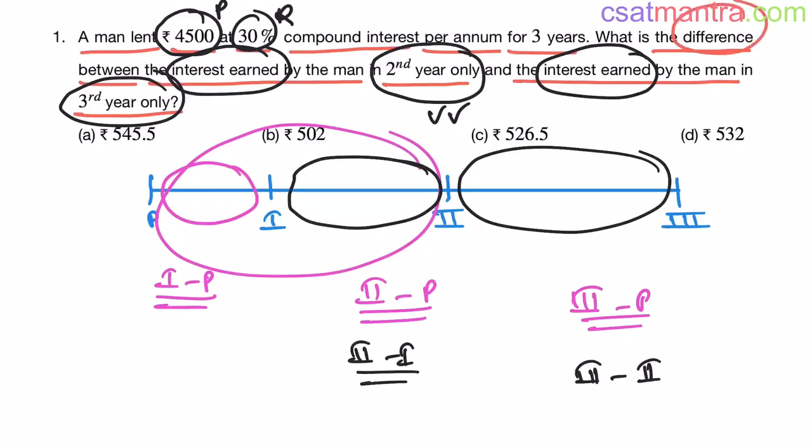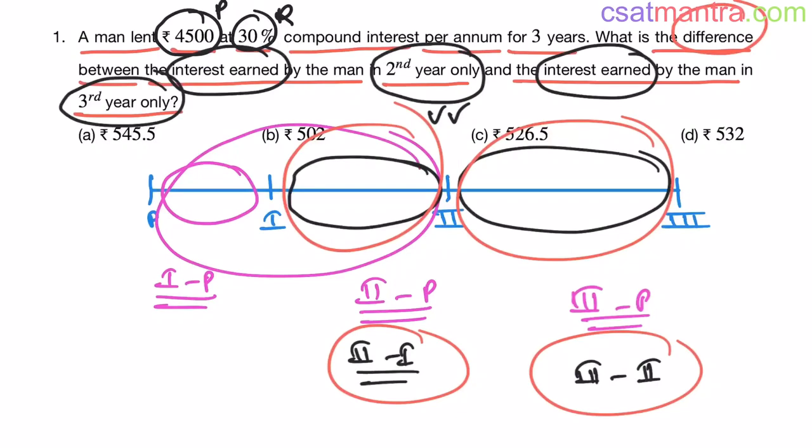Now, we want difference between this value and this value. Now, see few observations here. Interest earned in 2nd year will be always greater than 1st year. When it comes to compound interest, you are having interest on interest, my friends. When it comes to simple interest, you are having interest on principal only. But when it comes to compound interest, principal and interest on interest. In this year, you had interest on the interest earned during 1st year also, my friends. Similarly, interest earned in 3rd year will be greater than interest earned in 2nd year because you are having interest on interest here.